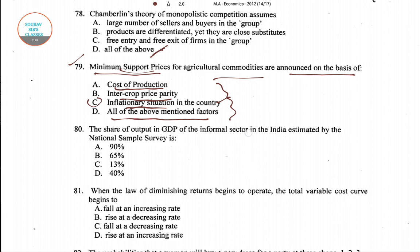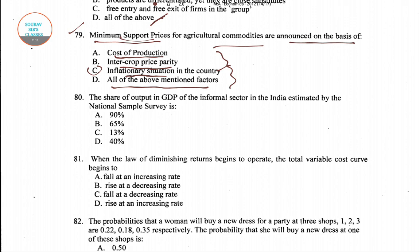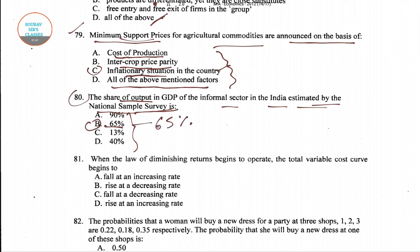Now question number 80: The share of output in GDP of the informal sector in India estimated by the National Sample Survey is — option B is the right answer, which is 65%. The share of output in GDP of the informal sector in the economy estimated by the National Sample Survey is 65%.